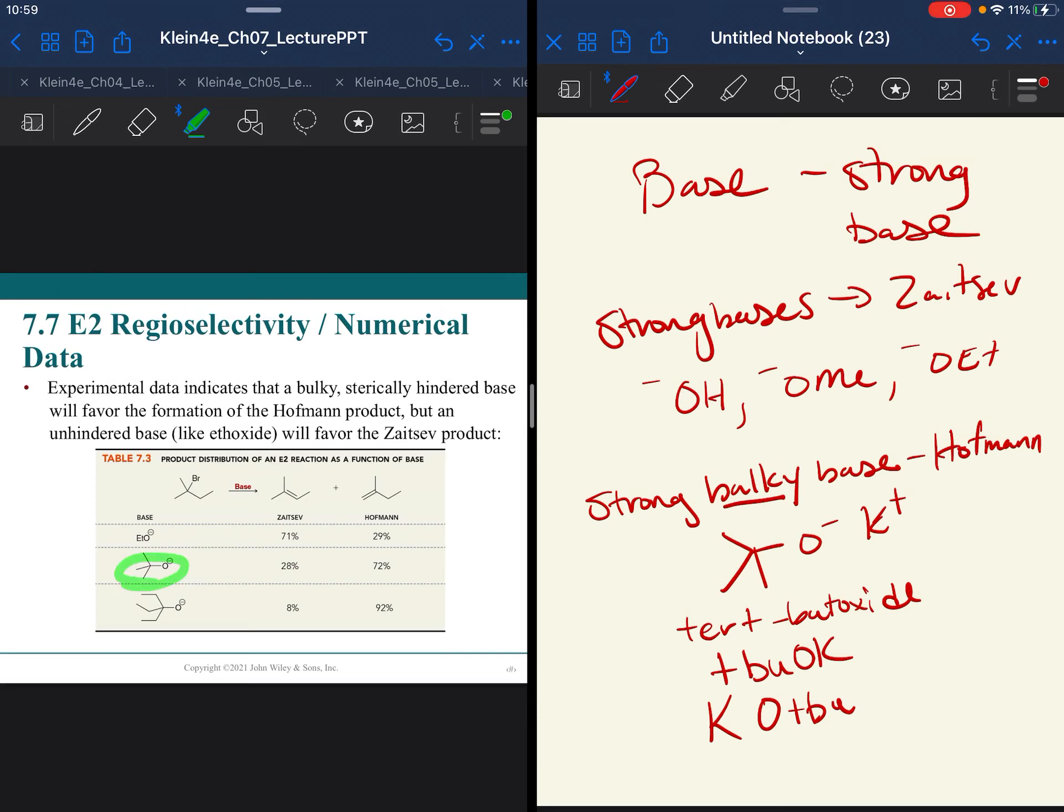Notice what happens over here. That's this one right here. When we have ethoxide, the smaller base, 71% is Zaitsev. When we use the bulky base, it flips almost exactly to 72% Hofmann.